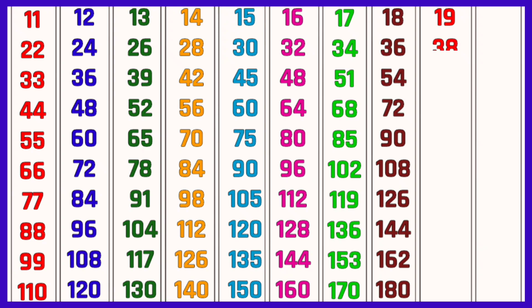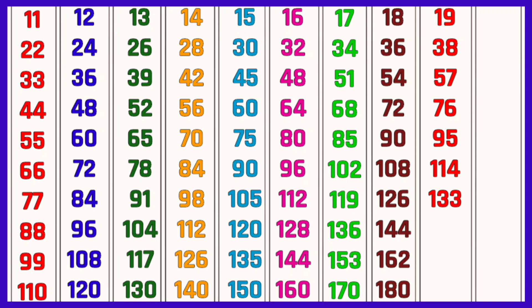Table of 19: 19 ones are 19, 19 twos are 38, 19 threes are 57, 19 fours are 76, 19 fives are 95, 19 sixes are 114, 19 sevens are 133, 19 eights are 152, 19 nines are 171, 19 tens are 190.